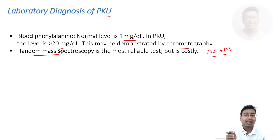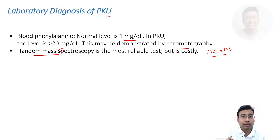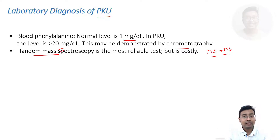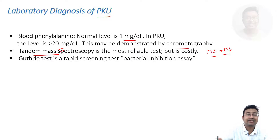So if an MCQ asks for one test to confirm the diagnosis of any inborn error of metabolism for any amino acid, the answer will be MS-MS, tandem mass spectrometry, or mass spectrometry. The next option would be chromatography. These are all analytical methods. Nowadays, genetic methods such as DNA probes are also available.